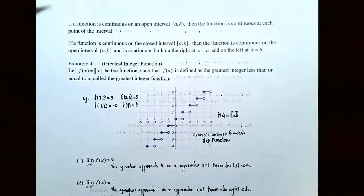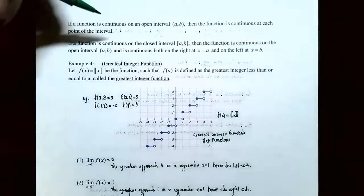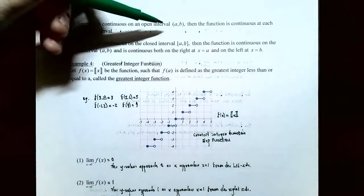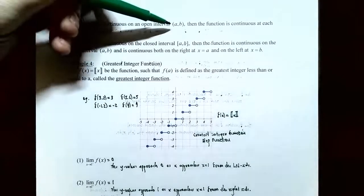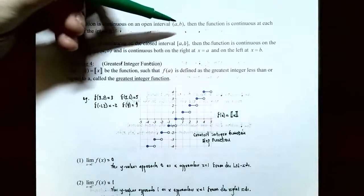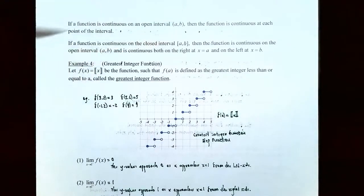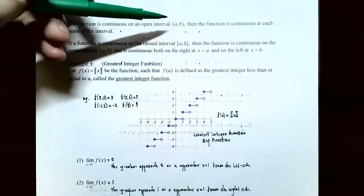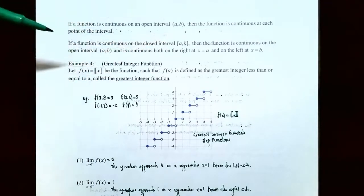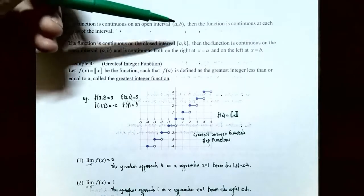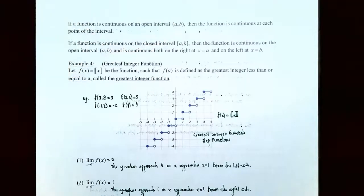What does it mean for a function to be continuous on an interval? If the function is continuous on an open interval (a, b) — not including a and not including b, but all x values between a and b — the function is continuous at every single point between x equals a and x equals b, not including the endpoints.